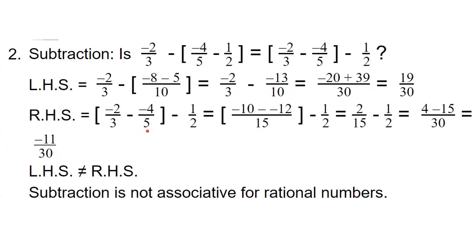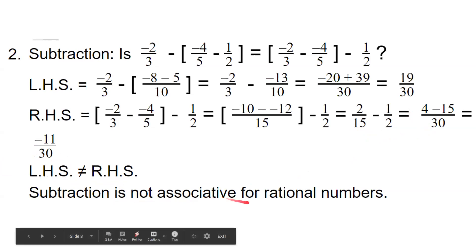Now we will take RHS. RHS is equal to: first we have two fractions in the bracket, so taking LCM and finding the difference. 15 becomes the LCM. Numerator is minus 10 minus minus 12 upon 15, minus the third fraction 1/2, equal to 2 upon 15 minus 1/2. Again simplifying by taking LCM, we get 4 minus 15 upon 30, equal to minus 11 upon 30. Here LHS and RHS values are different, therefore LHS is not equal to RHS. Therefore, we can say that subtraction is not associative for rational numbers.